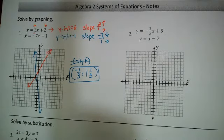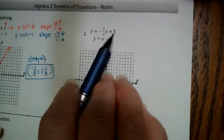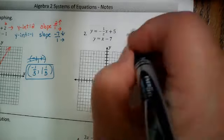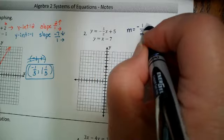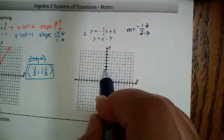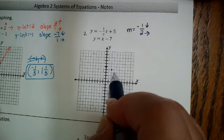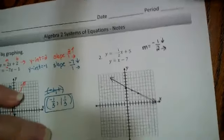Let's try the next one. These are set up in slope-intercept form. Here I'm going to start at the five on the y-axis, and my slope is negative one-half, so I will go down one and to the right two. I repeat that — down one over two — as many times as I want, and then just play connect the dots. A ruler comes in handy here.